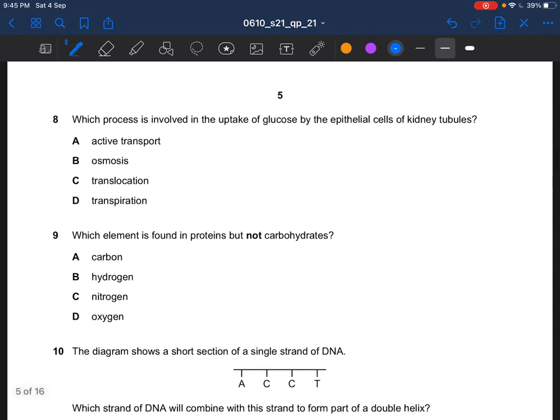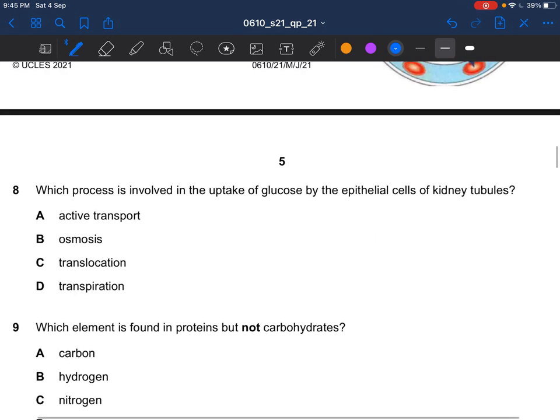Next question. Which process is involved in the uptake of glucose by the epithelial cells of kidney tubules? This is an example of active transport. Active transport is the movement of particles through a cell membrane from a region of lower concentration to a region of higher concentration using energy from respiration. Requires energy. Another example of active transport would be the ion uptake by root hairs.